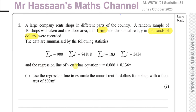The regression line of Y on X has equation Y = 6.066 + 0.136X. Use the regression line to estimate the annual rent in dollars for a shop with a floor area of 800 meters squared.